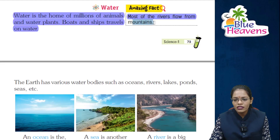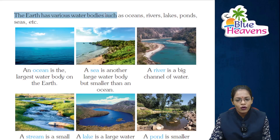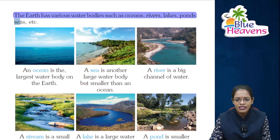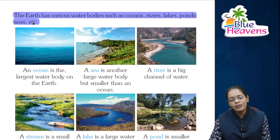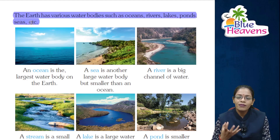Amazing fact: most rivers flow from mountains. The Earth has various water bodies such as oceans, rivers, lakes, ponds, seas, etc. A water body is a source where water collects.